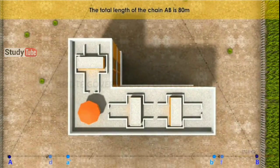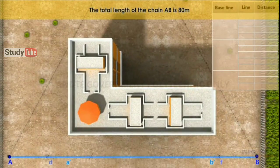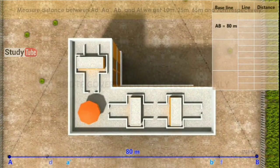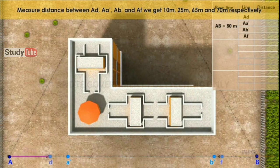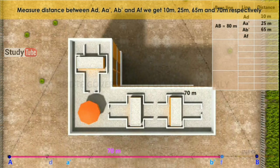The total length of the chain AB is 80m. The distances between AD, AA', AB', and AF are measured, giving values of 10m, 25m, 65m, and 70m respectively.